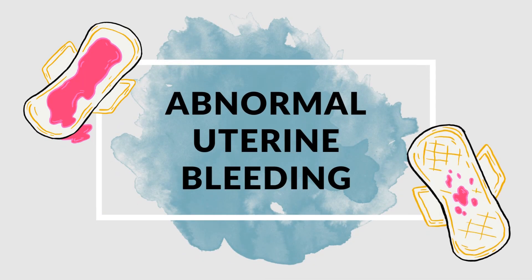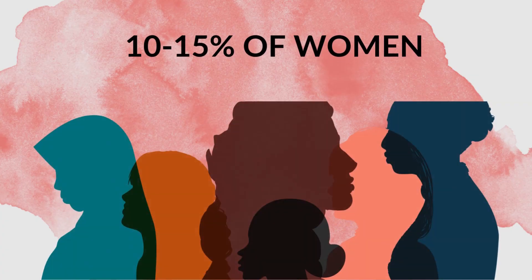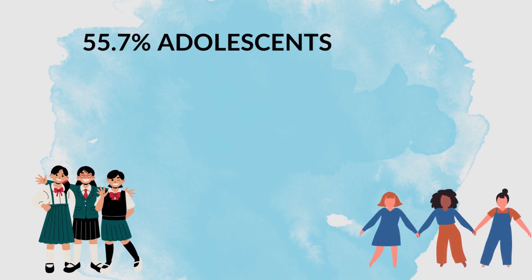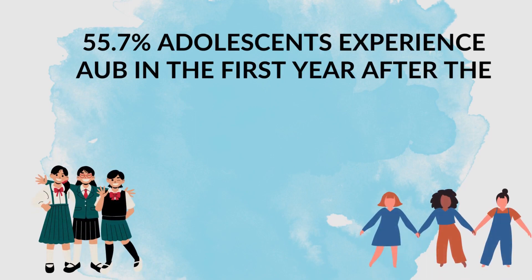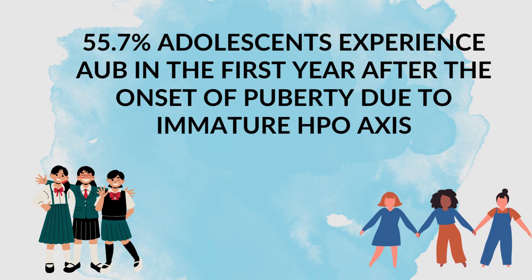Let us discuss abnormal uterine bleeding. About 10 to 15 percent of women experience episodes of abnormal uterine bleeding at some time during the reproductive years. It is common during the extremes of reproductive life, following a pregnancy or during lactation. 55.7 percent of adolescents experience abnormal uterine bleeding in the first year after the onset of puberty, due to an immature hypothalamic-pituitary-ovarian axis leading to anovulatory cycles. It generally takes 18 months to 2 years for regular cycles to be established.